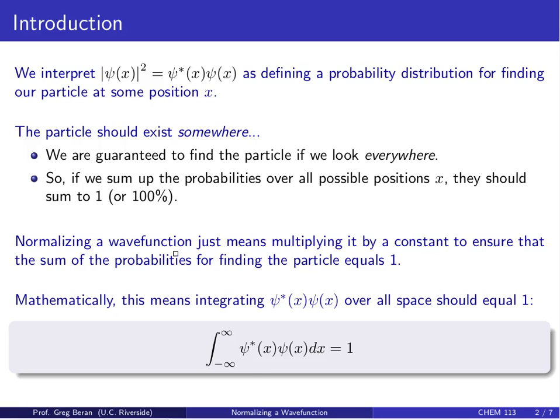Because we believe that particle should exist somewhere, we are guaranteed to find that particle if we look everywhere. So if we sum up the probabilities for finding it at every possible position x, they should sum up to a 100% chance of finding the particle, or a probability of 1.